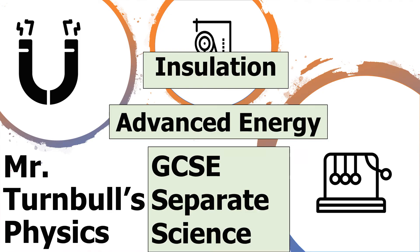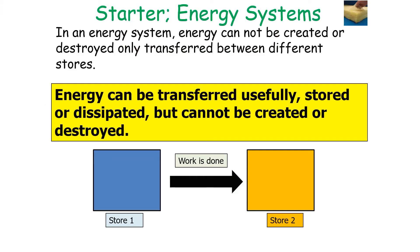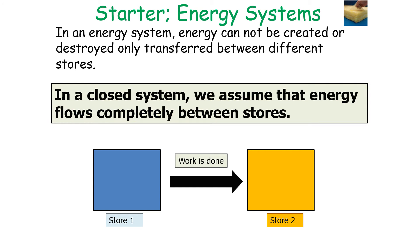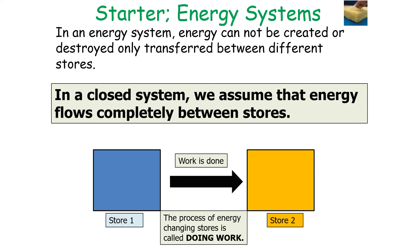The next topic is insulation. In any energy system, energy cannot be created, it cannot be destroyed — it can only be transferred between different stores. Energy can be transferred usefully, stored, or dissipated, but can't be created or destroyed. In a closed system, we assume that energy flows completely between two different stores. The process of energy changing stores is called doing work.